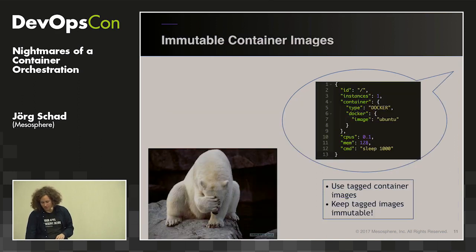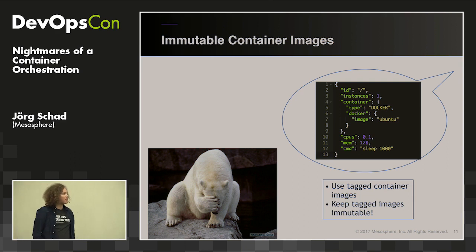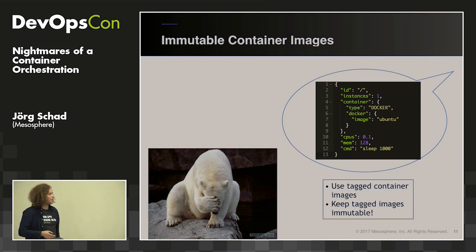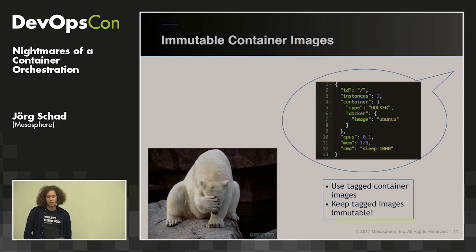On immutable container images: if you just specify 'ubuntu' as your image, that implicitly means ubuntu:latest, which will change over time. Imagine 100 containers running your platform; one fails, gets restarted, pulls ubuntu:latest — now you have 99 containers on version 16.x and one on 17.10. Debugging becomes hell. You should only use tagged images.